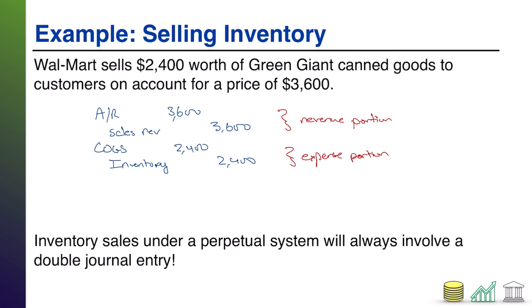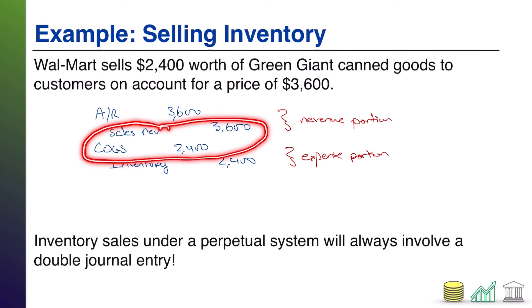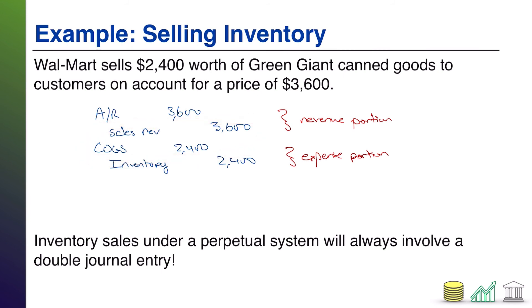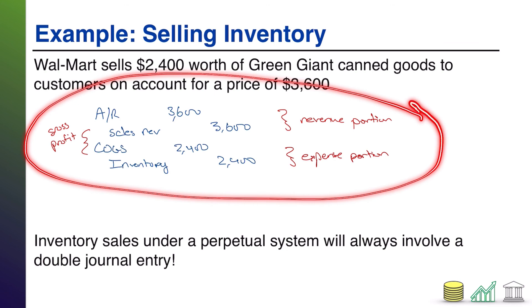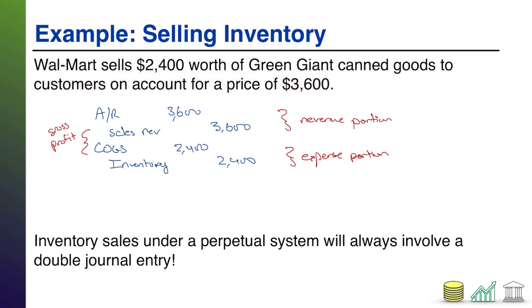The reason it's set up this way comes down to these two pieces: sales revenue and COGS. Sales revenue is a revenue on your income statement; cost of goods sold is an expense also on your income statement. The difference between that revenue and that expense establishes the profit of the business — specifically when it comes to inventory, we call this the gross profit: the profit you're making off of the goods you're selling before all other expenses of the business. Note that inventory sales under a perpetual system will always involve a double journal entry — one portion for revenue, a second portion for expense — and that captures your entire transaction.